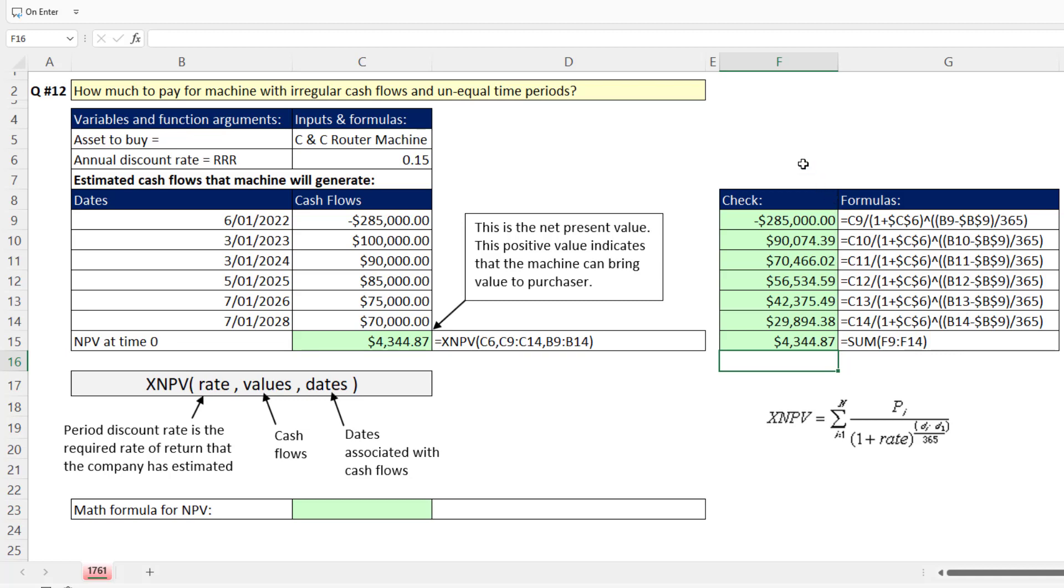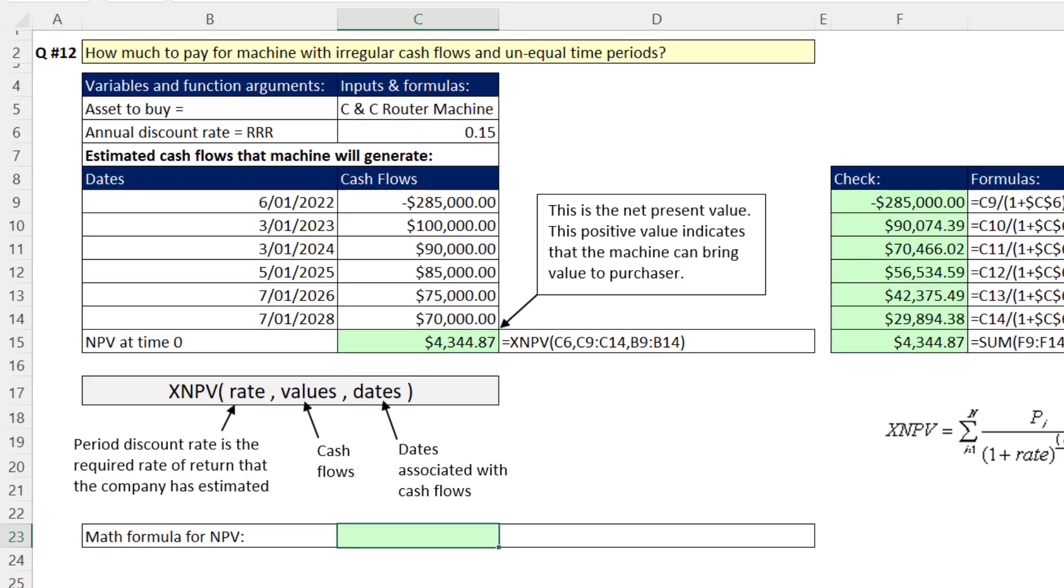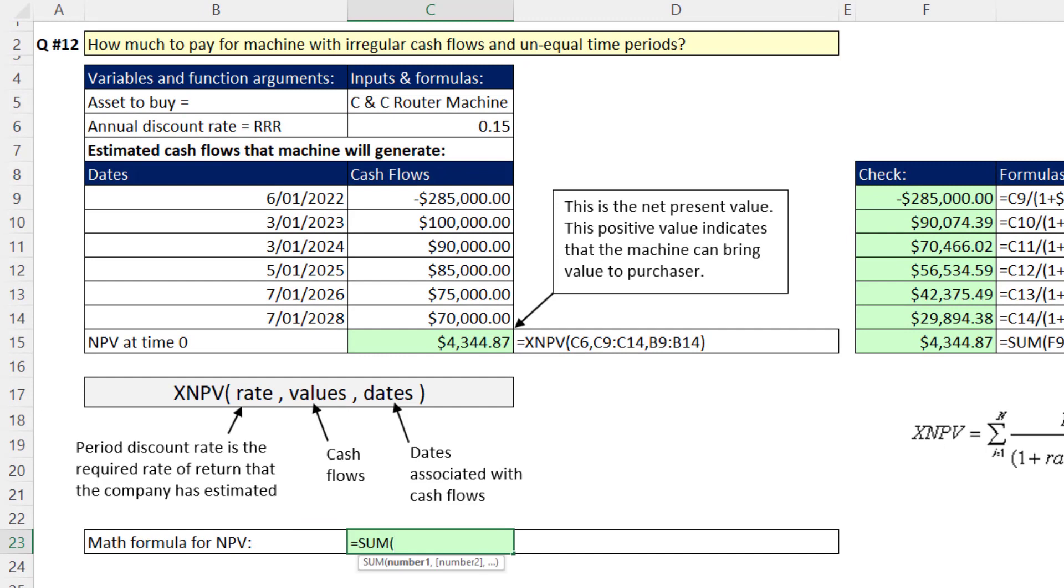Well, guess what? We don't even have to do it this way. Here's your bonus formula: we can do the whole thing in a single array formula. So we'll say sum, because we're going to add all of these cash flows, and then we need to divide all of these values.